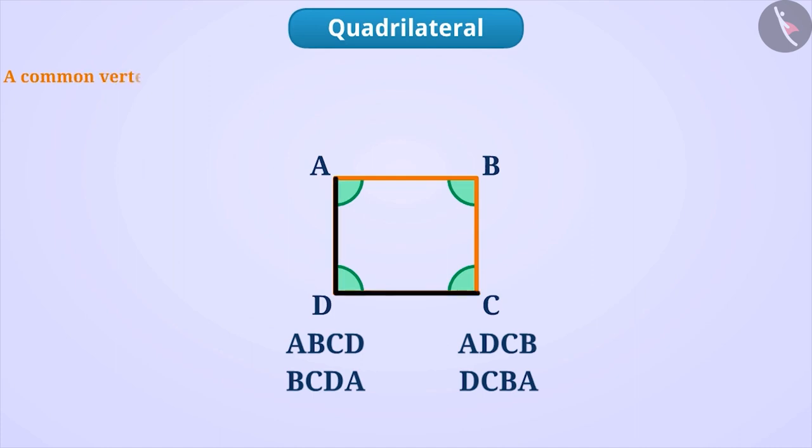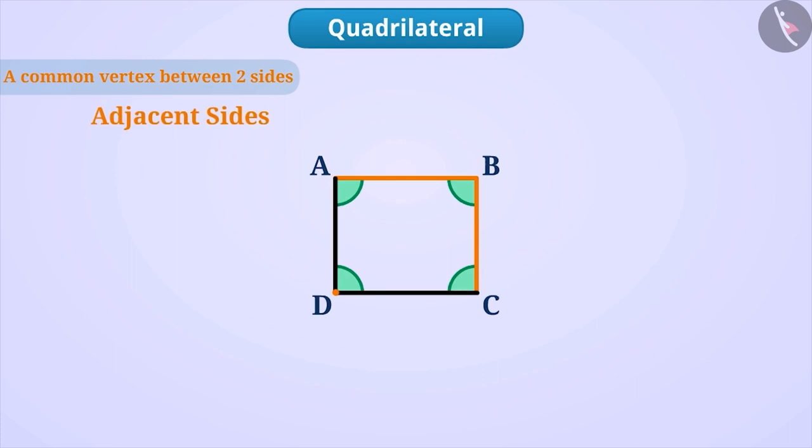If any two sides of the quadrilateral have a common vertex, then such sides are called adjacent sides such as AB and BC, BC and CD, CD and DA, DA and AB.